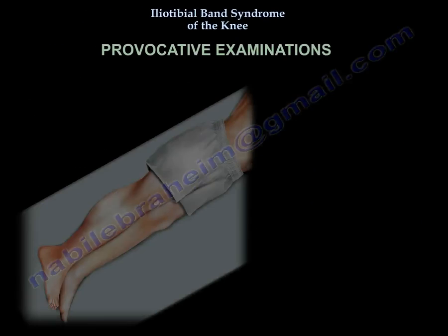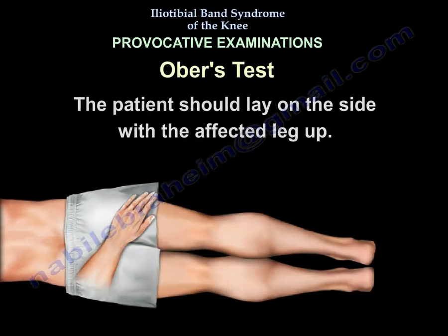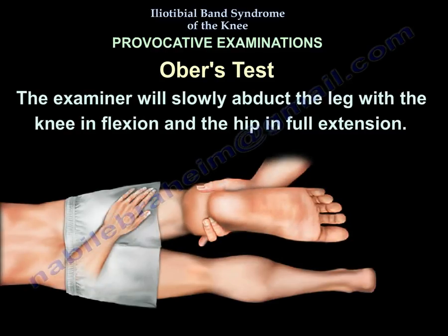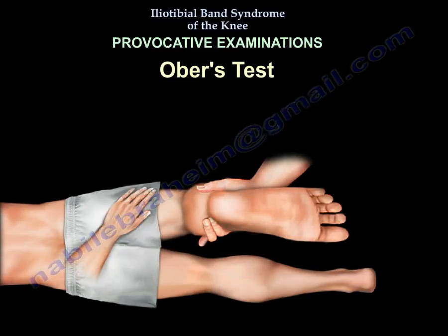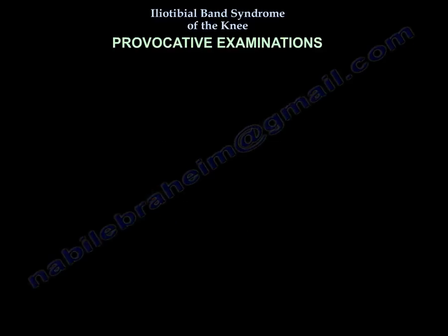There are some provocative examinations, such as the Ober test, which is a clinical test used to assess tightness of the Ileotibial band. The patient will lay on their side with the affected leg up. The examiner will slowly abduct the leg with the knee in flexion and the hip in full extension. When the IT band is tight, adduction of the leg will be limited as the leg will not touch the other knee, and the test is considered positive.